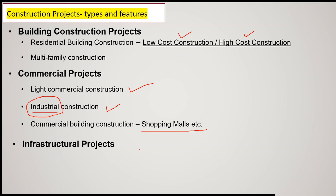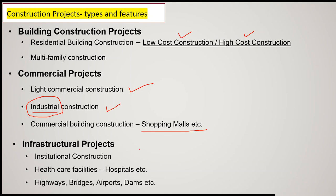The third type is infrastructural projects — institutional construction such as school buildings, university buildings, or healthcare facilities like hospitals. Construction of highways, bridges, airports, and dams also comes under infrastructural projects. So we have discussed three types: building construction projects, commercial projects, and infrastructure projects.